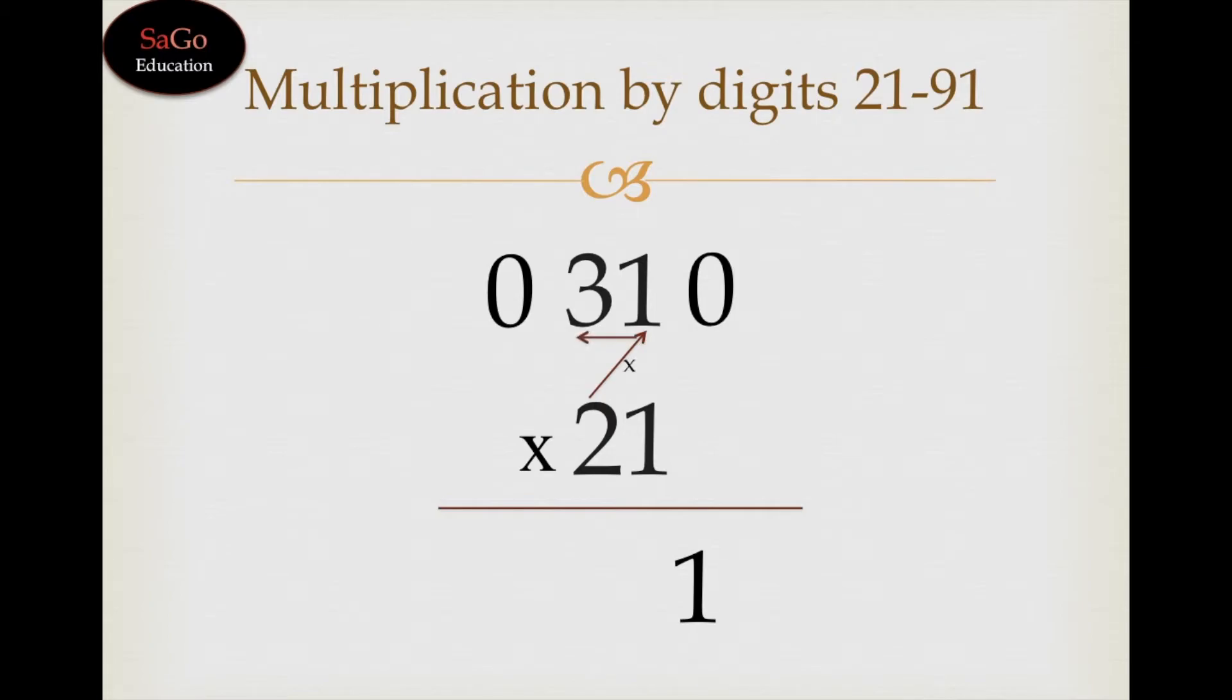2 times 1 is 2, plus 3 makes 5. Write 5. Now 2 times 3 is 6, and add 0 in it. It will come 6 only. So 651 is the answer.